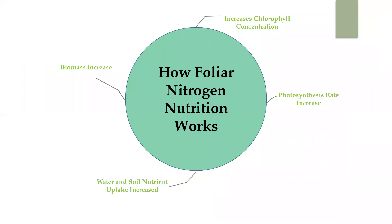How foliar nitrogen nutrition works. A foliar application increases chlorophyll on the leaf, which is the green pigment of the plant. The chlorophyll acts like a tiny little greenhouse — it helps to trap photons from the sun on the leaf longer. We're talking about nanoseconds longer, but doing this dramatically increases the rate of photosynthesis. Increased photosynthesis will increase the water and nutrient uptake through the roots. This in turn increases the size of the leaves and biomass, which then results in more photosynthesis.